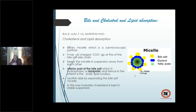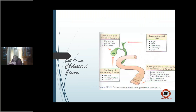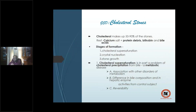When cholesterol remains in suspension, it does not precipitate — that is the bile salt function. Stone formation occurs at four possible sites: problems with cholesterol metabolism causing supersaturated bile; problems at the gallbladder level with excessive nucleation or nidus formation; and enterohepatic circulation problems. Cholesterol stones: more than 50 percent cholesterol, the rest being calcium, protein debris, bilirubin, and bile acids. Three stages: supersaturation, nucleation, and growth.